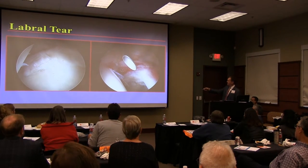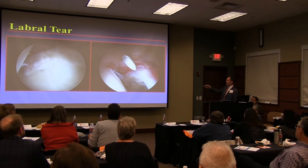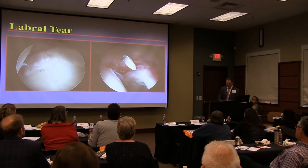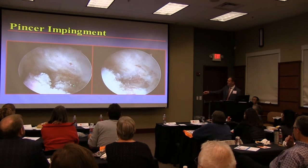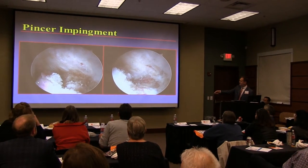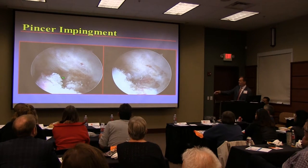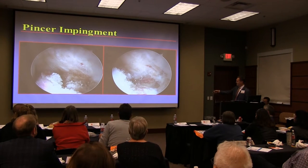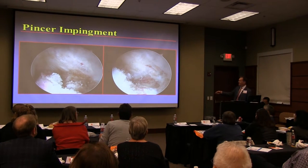We put a spinal needle in, then a needle through the spinal needle, and sequentially dilate to place cannulas. We want to free the labrum up. There's usually a bump of bone — the pincer impingement — that we take off. Here's the bump of bone, here's the labrum, here's the edge of the acetabulum behind the tear. We take a burr and take that down: it removes the bump of bone and freshens up the bone for healing, like using a rototiller in March. Then we put anchors in along the edge, pass sutures around or through the labrum, and tie them to secure the labrum back onto the acetabulum.